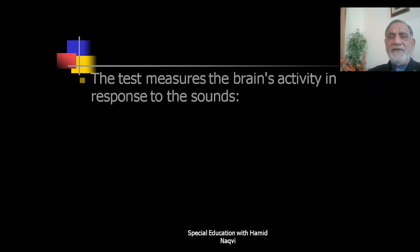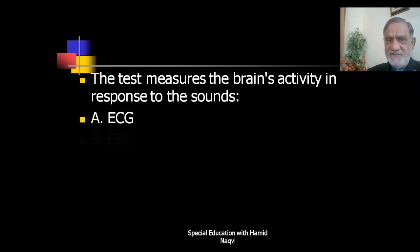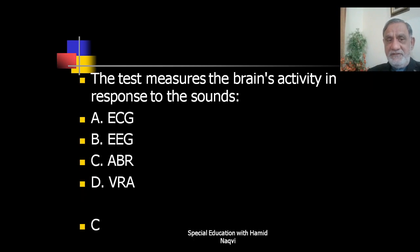Next question: Which test measures the brain's activity in response to sounds — ECG, EEG, ABR, or VRA? The correct answer is C — the test that measures the brain's activity in response to sound is ABR (Auditory Brainstem Response).